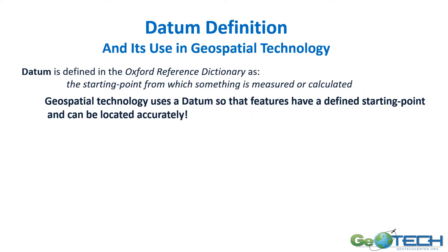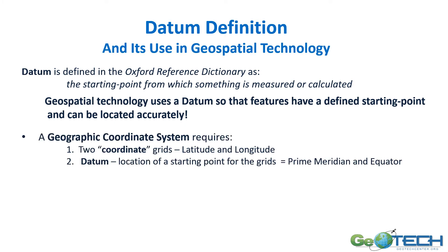The Oxford Reference Dictionary defines datum as the starting point from which something is measured or calculated, and we use those starting points for our datums in geospatial technology. For a geographic coordinate system we have a coordinate grid of latitude and longitude, and the starting points of those grids — the datum starting points — are the prime meridian and the equator. So latitude and longitude are based on that starting point.